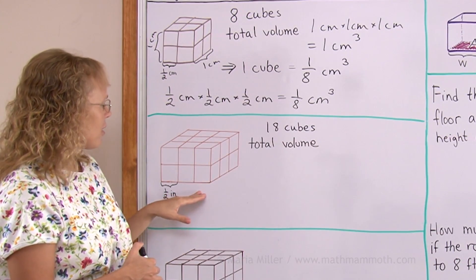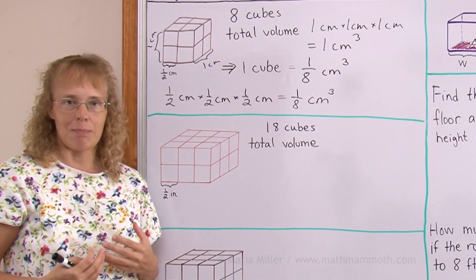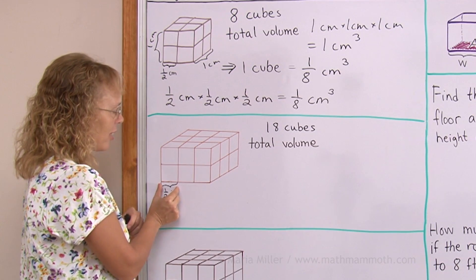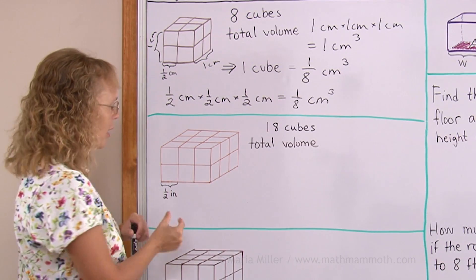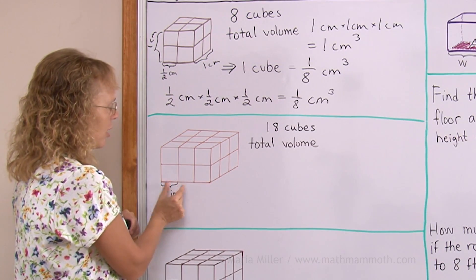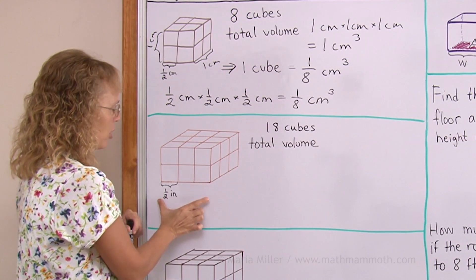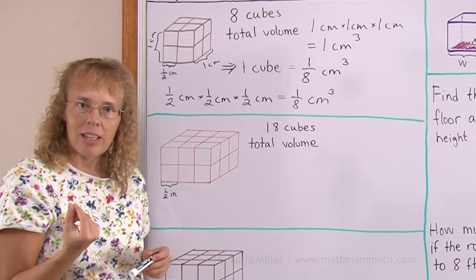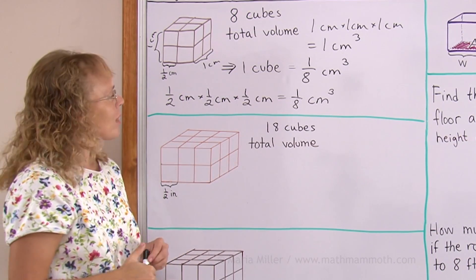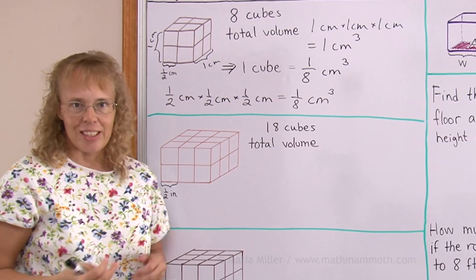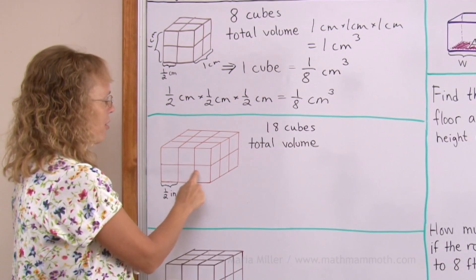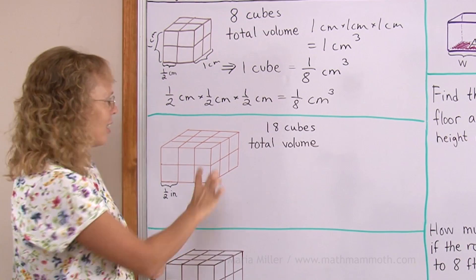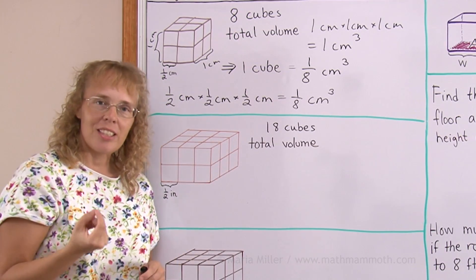Let's look at another example. This is similar, but we've added some more cubes. Let's say this one edge length here is half an inch. So this total here is one and a half inches, and over here this way is also one and a half inches, and this way is just one inch. That's eighteen cubes — three this way makes nine on the bottom layer and two layers deep, so eighteen cubes total.